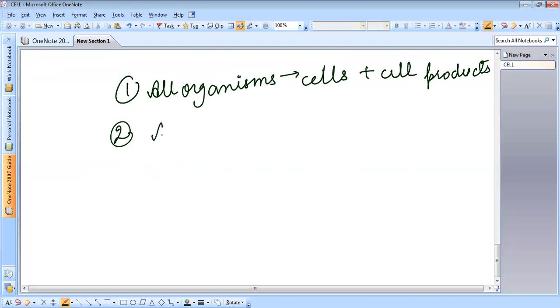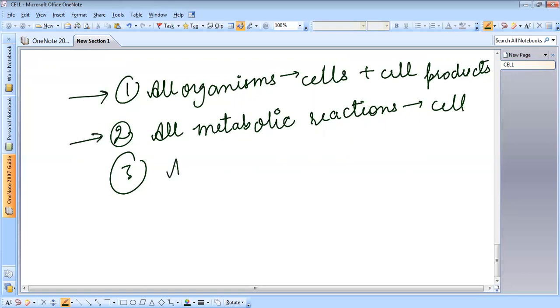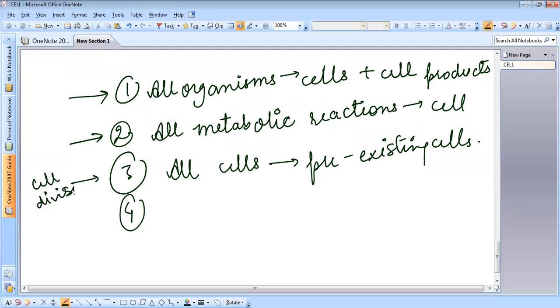The third point says that all cells arise from pre-existing cells. All cells come from pre-existing cells. They do not drop off from somewhere. They do not appear from thin air. They cannot originate spontaneously and they come into being only by the division of already existing cells. This happens by cell division.